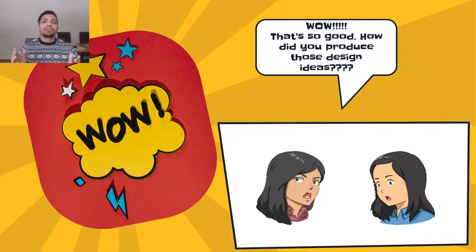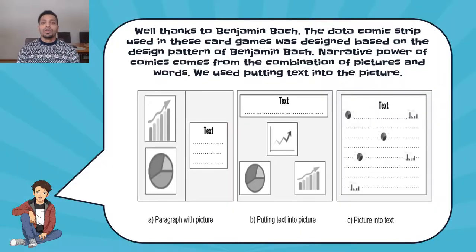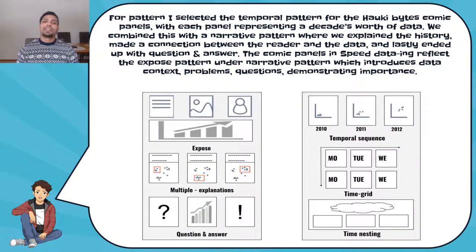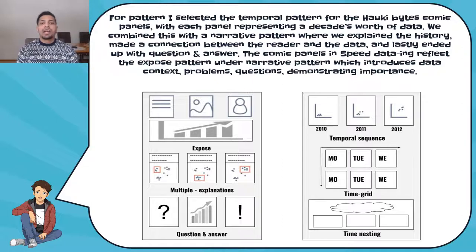Now I guess you are wondering how we came up with those design ideas. The data comic strip used in these card games was designed based on the design pattern of Benjamin Beck. For pattern, we selected the temporal pattern for the Haukibai comic panels, where each panel represents a decade's worth of data. We combined this with a narrative pattern where we explained the history, made a connection between the reader and the data, and ended with question and answer. The comic panel used in Speed Data In reflects the exposed pattern under narrative pattern, which introduces data, context, problems, questions, and demonstrating importance.